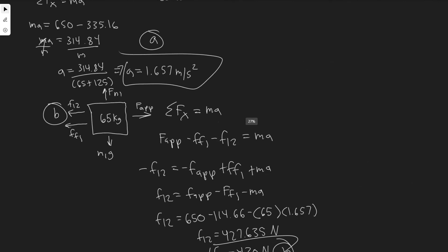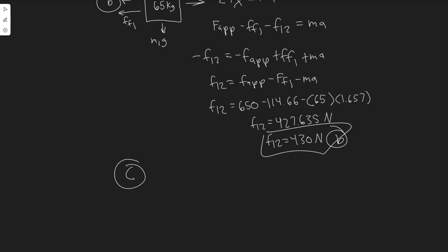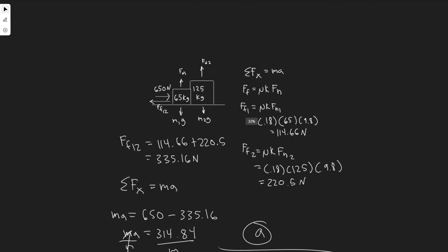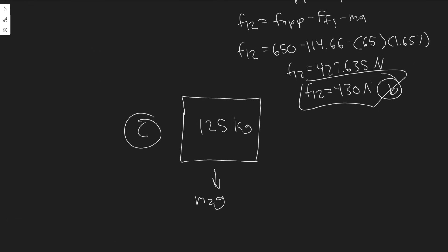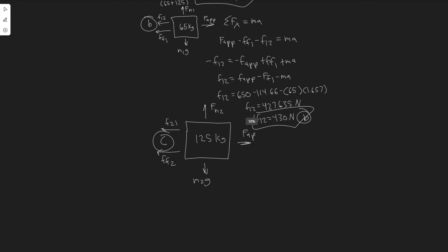That's the force the crates are applying on each other due to the normal contact force. Now for part C, we reverse the order of the crates. The 125 kg crate is now in front receiving the applied force. We draw a free body diagram for box 2 alone: m2g, normal force Fn2, the applied force, friction force FF2 for this box, and F21 — the force applied on box 2 due to box 1 — which is what we're solving for.